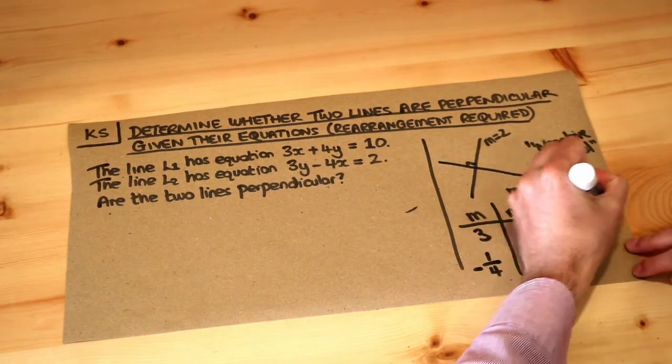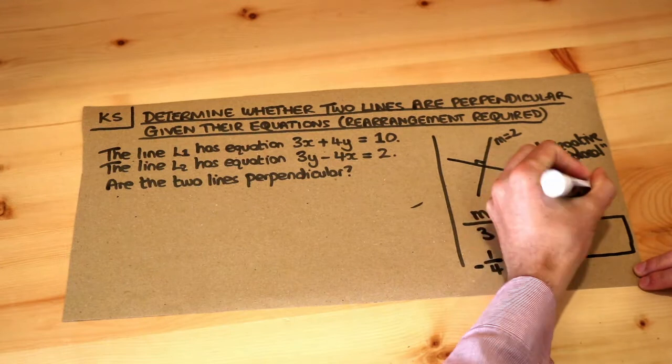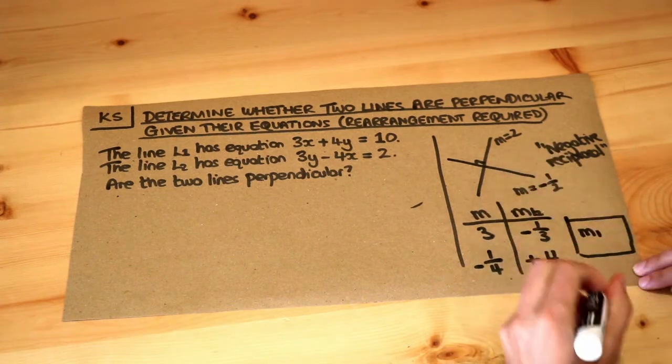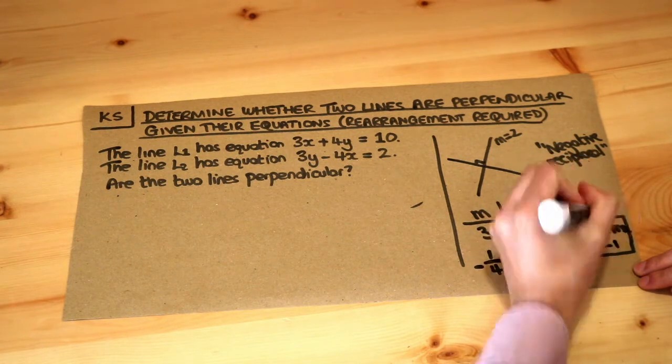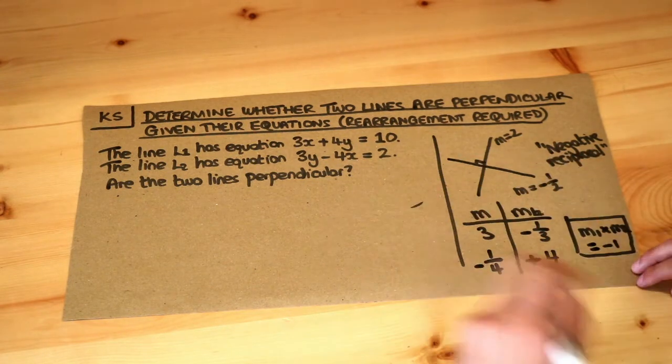And also remember that if they were perpendicular, then the two gradients multiply together. So the gradient of the first line times the gradient of the second line would be equal to -1 if they were perpendicular.